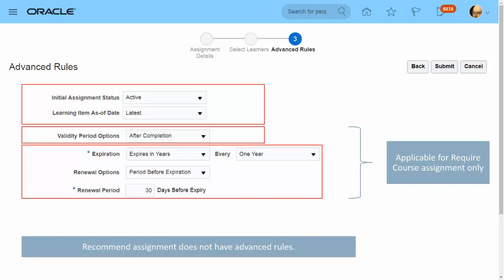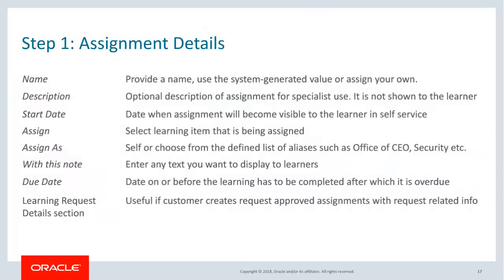Upon submitting, the learning assignments are created. Voluntary and required assignments show in the learner's current learning in self-service. Recommend assignments show in the learner's view recommendations area in self-service. Let's review the various attributes for each step of the learning assignment process. Assignment Details is step one, where the specialist provides information about the assignment. Note that due date and 'With This Note' as a mandatory field apply only to required assignments.